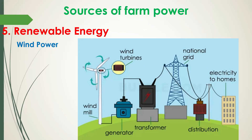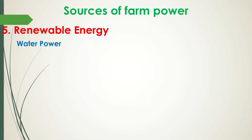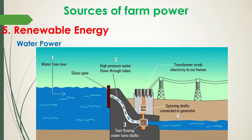Another renewable energy is water. The energy of falling water can be harnessed to produce useful energy with the use of hydro technology. To convert the energy of falling water, you need a water turbine. This water turbine converts the falling energy of water into rotating mechanical energy, which rotates the shaft of the electric generator to generate electricity.